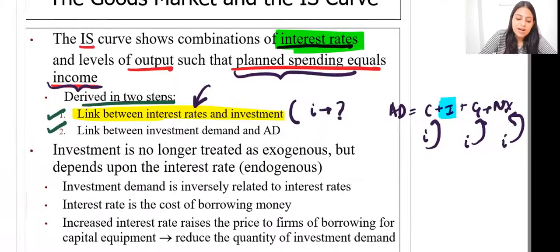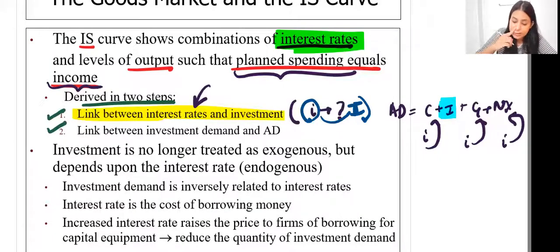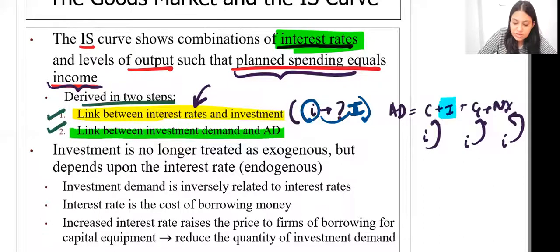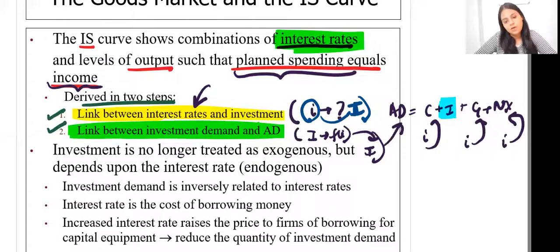So step one is to introduce investment as a function of interest rate. Once that's done, step two is to bring this investment back into the AD function, linking investment demand to aggregate demand.